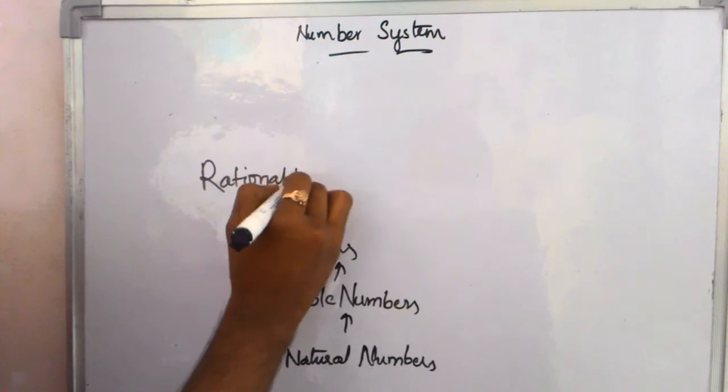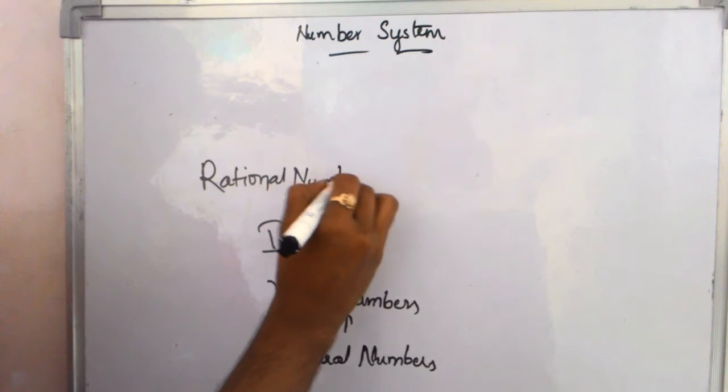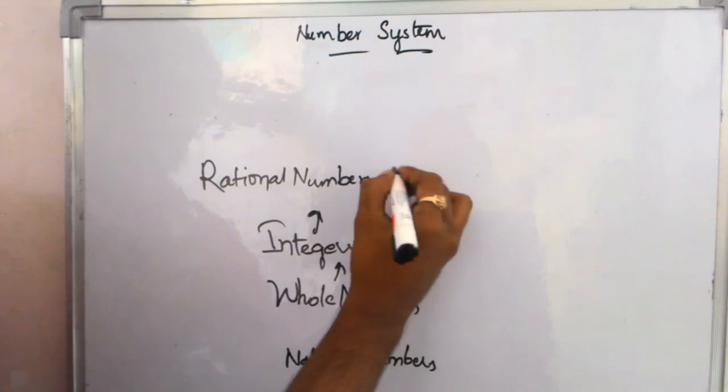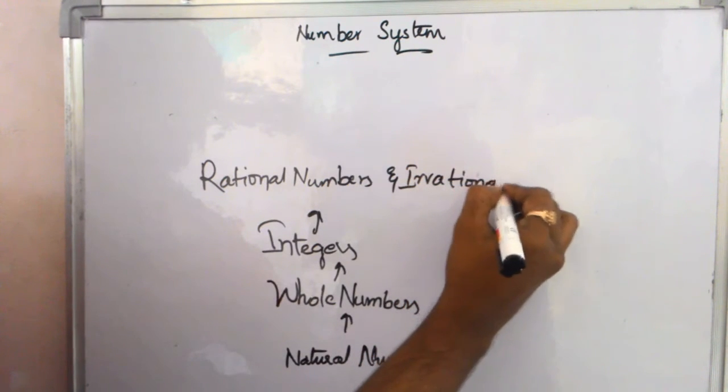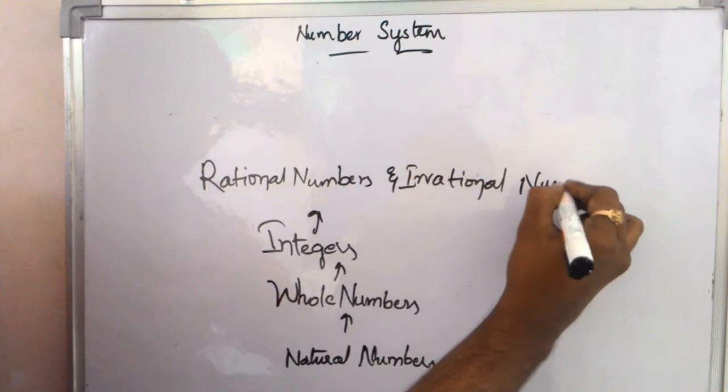And next, rational numbers and irrational numbers. Rational numbers are... what is the rational numbers?